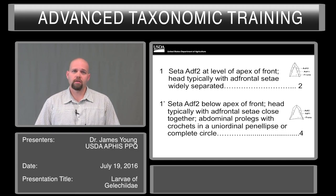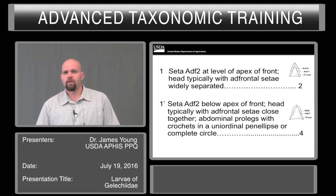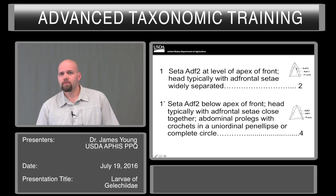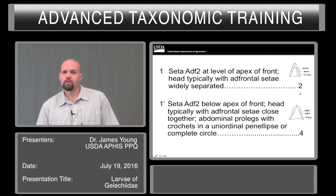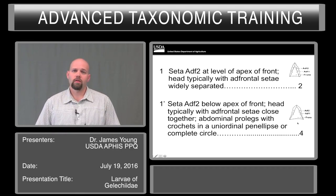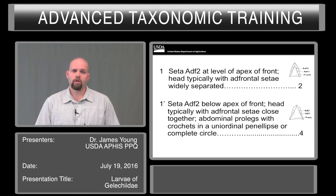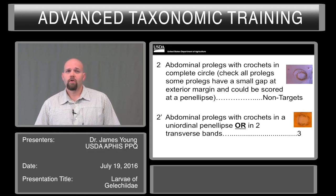The first character to look at is the presence of the SD seta on A2 — whether they are at the level of the front or if they're below it. Sometimes this is described as widely divergent or approximate.